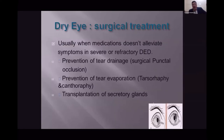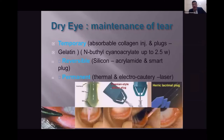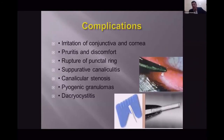Surgical treatment is used when medication does not alleviate symptoms in severe or refractory dry eye. To prevent tear drainage, punctal occlusion can be performed using lacrimal plugs available as temporary, reversible, or permanent options. To prevent tear evaporation, tarsorrhaphy or conjunctivoplasty or transplantation of secretory glands can be performed. However, there are many potential complications, so the use of lacrimal plugs remains controversial.